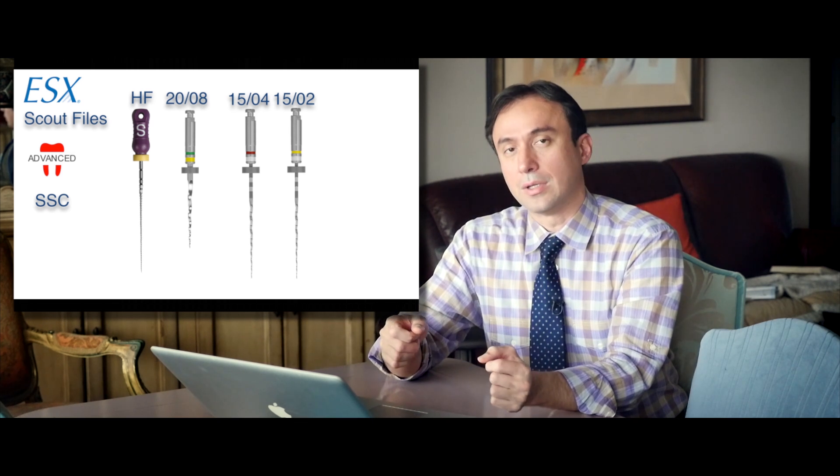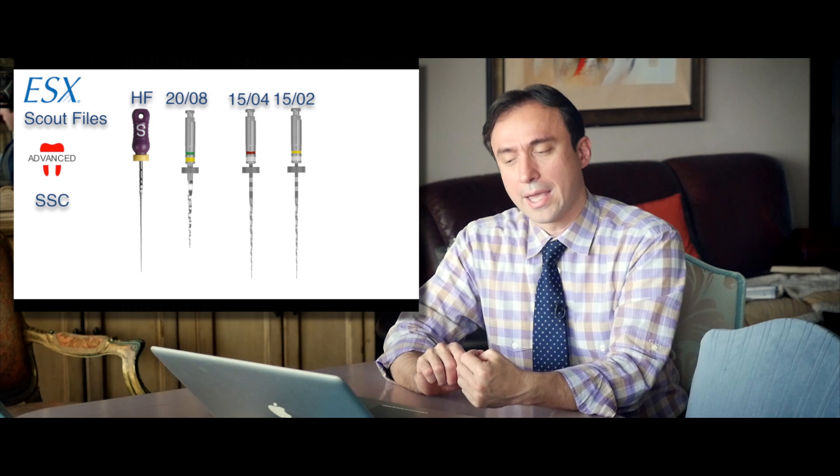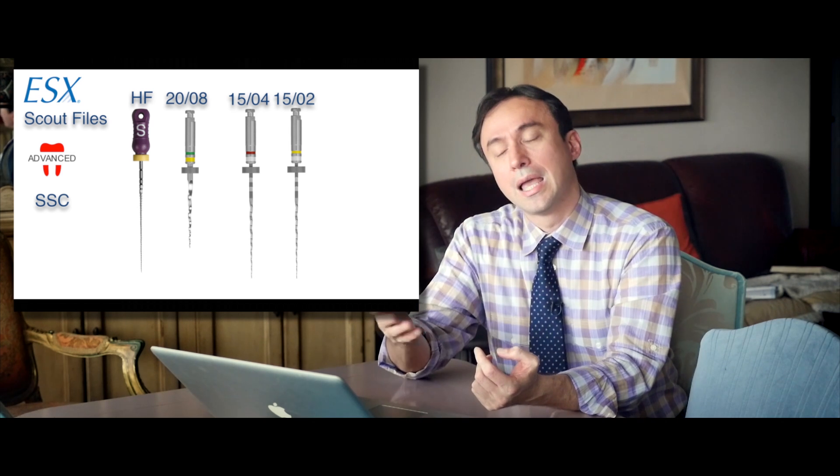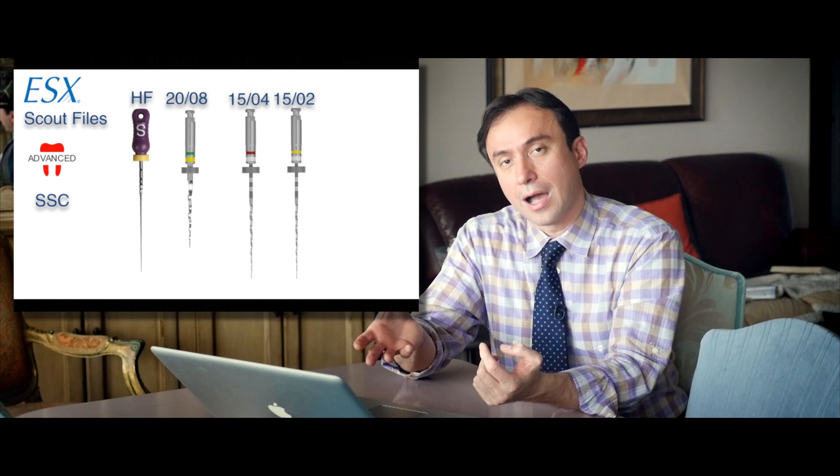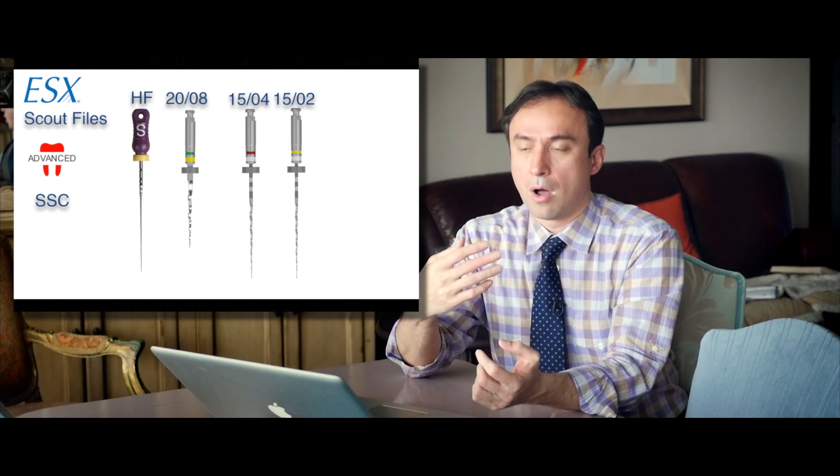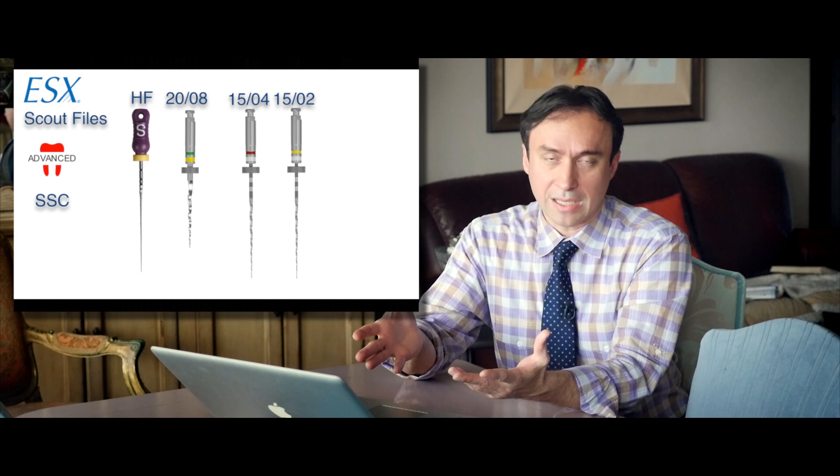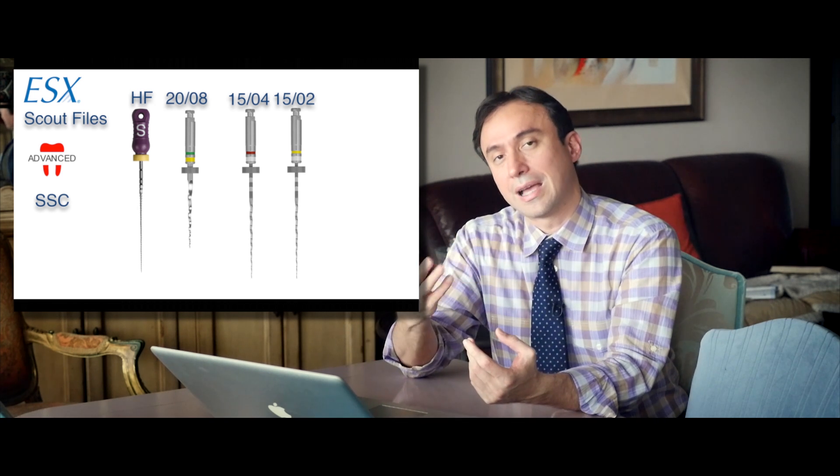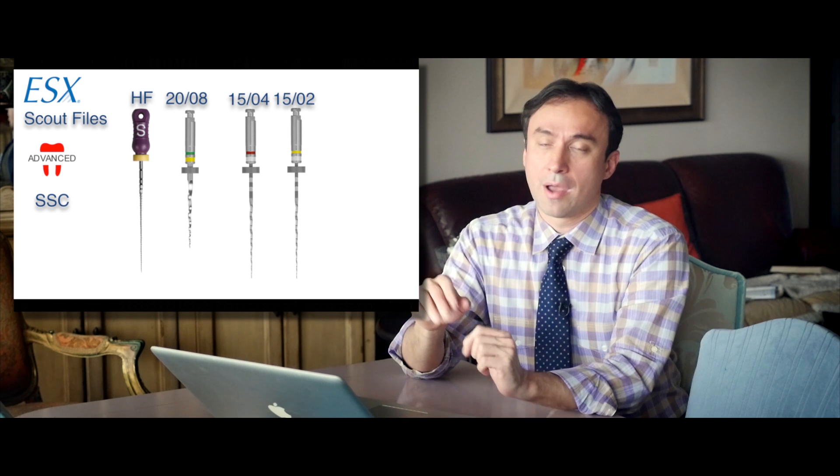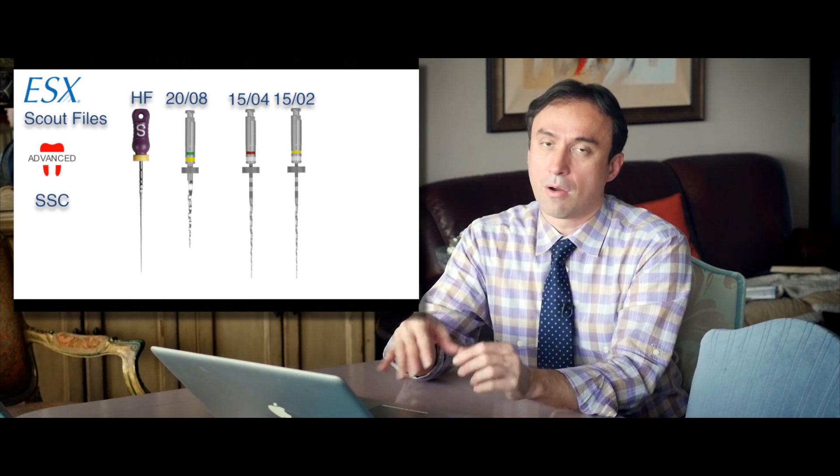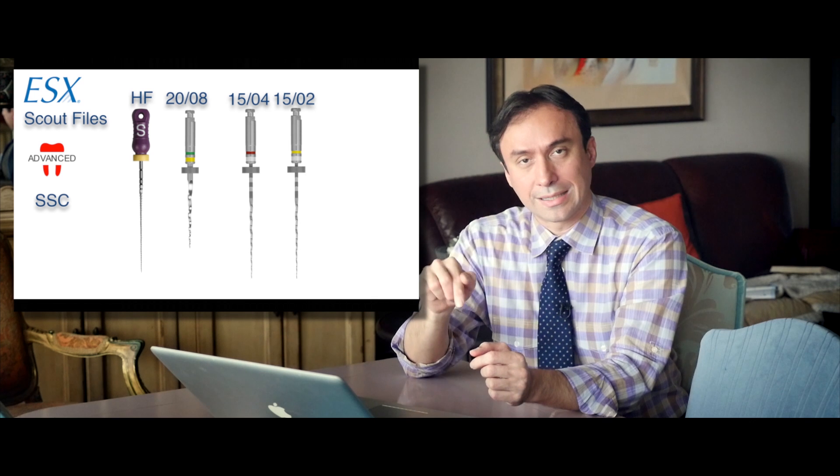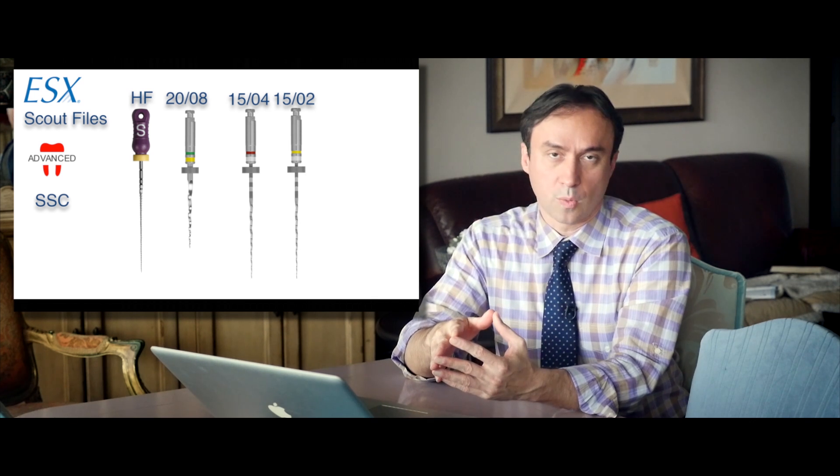The other thing that you need to realize is basically two rules apply here: SSC on every file, and the second one is that there should always be a stainless steel hand file in advance of your rotary file. So you always should have, but that doesn't have to be a size 1502. It could be a size 8 or a 10 hand file. But as long as the 8 or 10 hand file are down, then your 1504 and a 1502 using SSC will be able to work its way down.